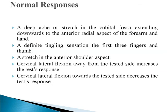Normal responses include a deep ache or stretch in the cubital fossa extending down to the anterior radial aspect of the forearm, a definite tingling sensation in the first three fingers and thumb, and a stretch in the anterior shoulder aspect. Cervical lateral flexion away from the tested side increases the test response, while cervical lateral flexion towards the tested side decreases the test response. All these are considered normal responses.